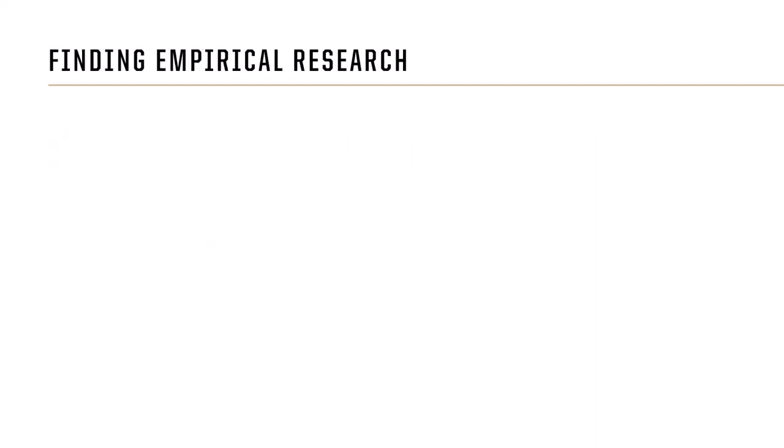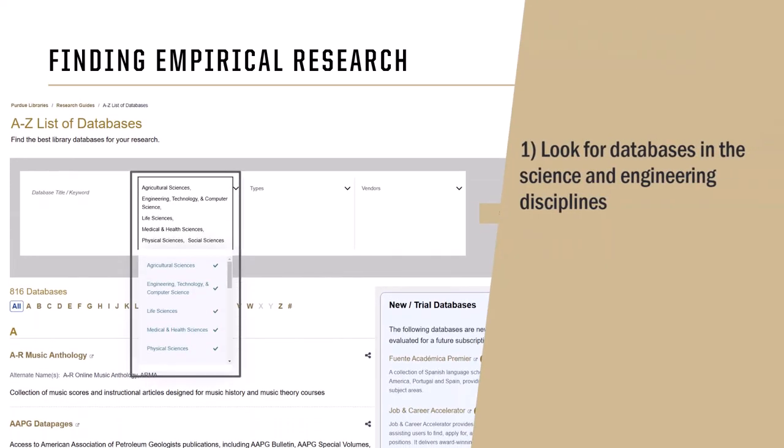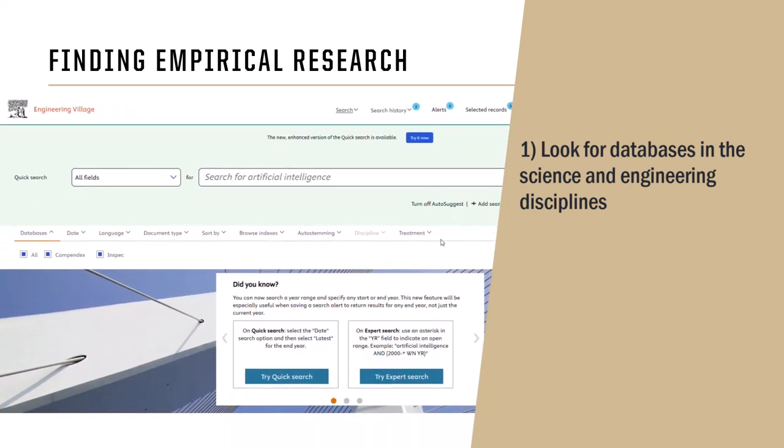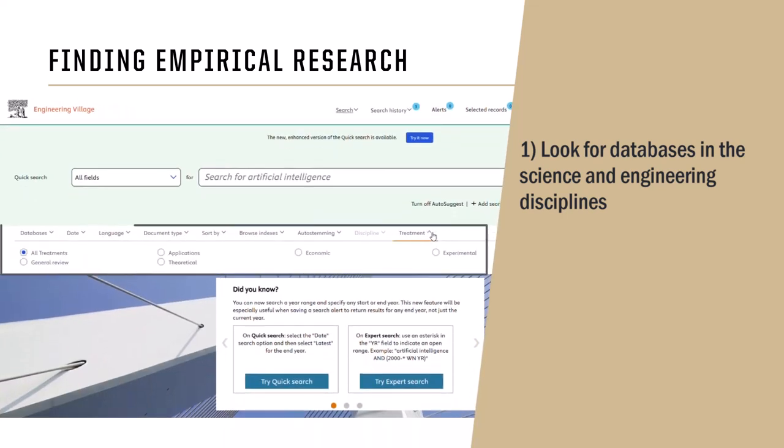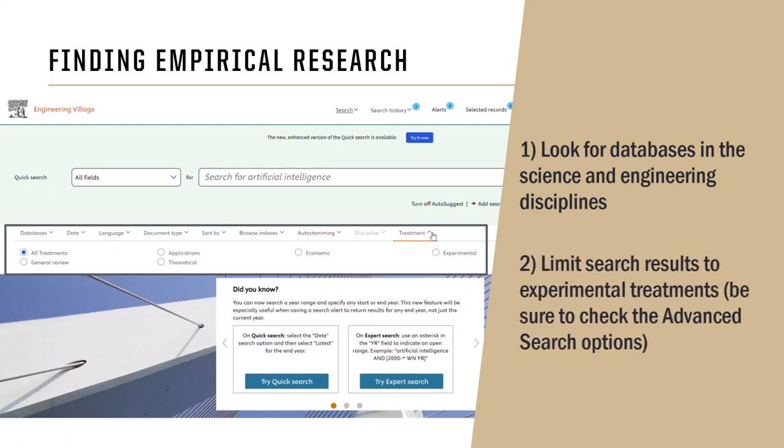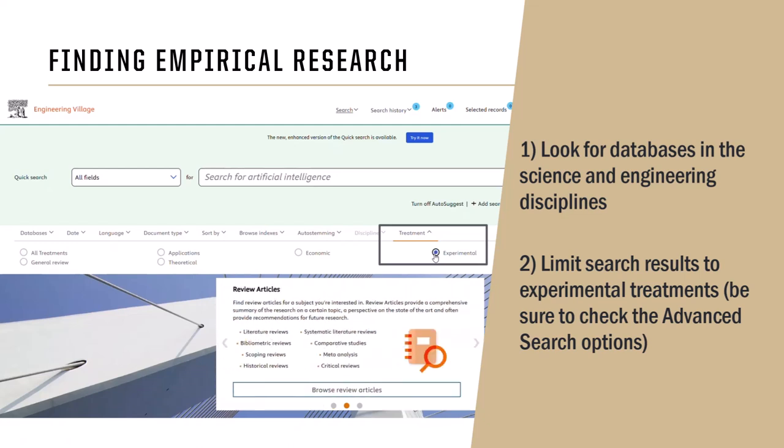So how do you find empirical research articles relevant to your discipline? In the sciences and engineering, most research is empirical. Many databases categorize research as experimental, theoretical, or reviews, and you can often limit your search to an experimental treatment to limit mostly to empirical research. This option might be hidden in advanced search options, so look at the interface of the database you are searching to see if an advanced search option is available.